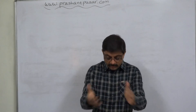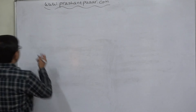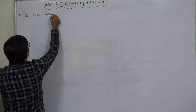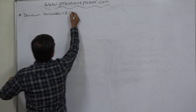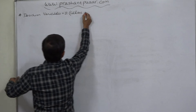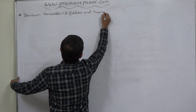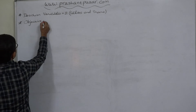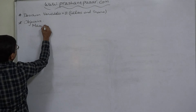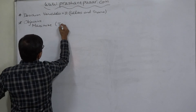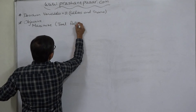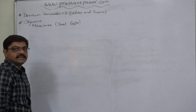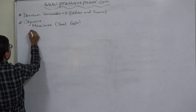Now let us solve the problem. First, let us be clear about the decision variables: how many soldiers and how many trains. The objective is maximization of total profit. We are not interested in maximizing per-unit average profit; we are interested in maximizing the total amount of profit.